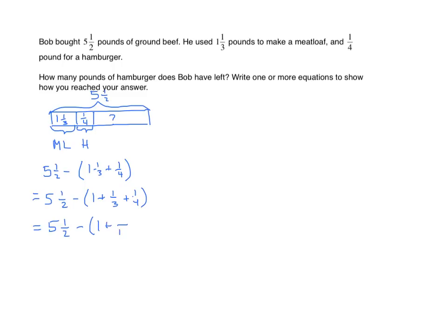Our common denominator is twelfths, because three times four is twelve. One-third becomes four-twelfths. One-fourth becomes three-twelfths. We'll simplify. We can take the entire expression now and find the sum. It's one and seven-twelfths.